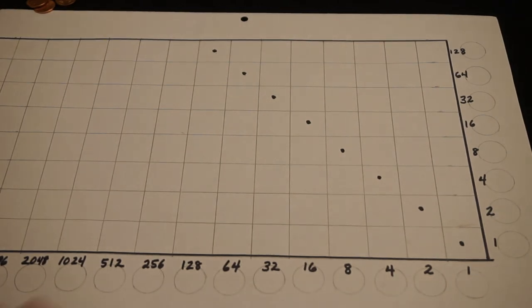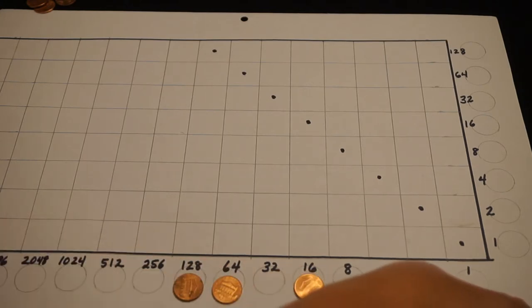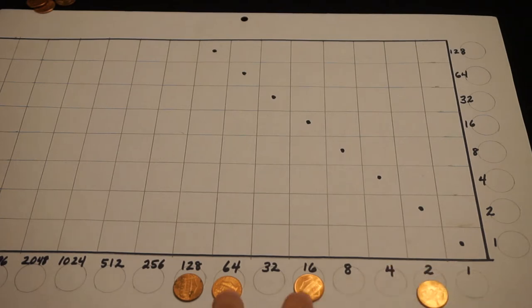210 divided by 10 is 21. So again, the challenging part is to write out the 210. This is too big, but 128 will go into it, plus 64, plus 16, plus 2. So 210, let's see, 16 and 64, that's 80. And 128 plus 2 is 130. 130 plus 80 is 210.